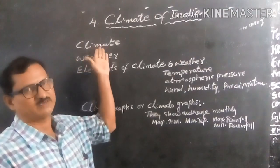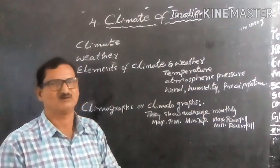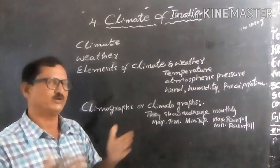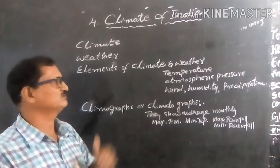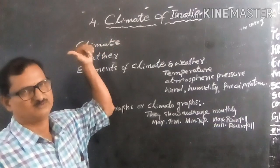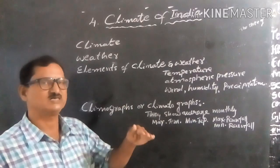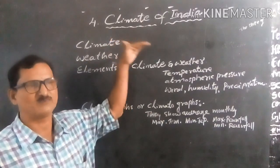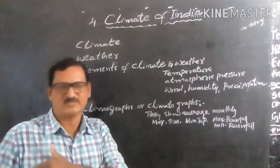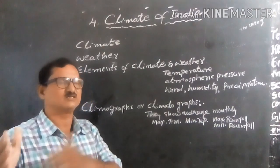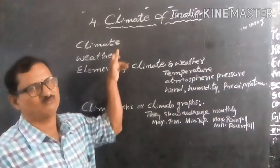Whereas climate is a state of atmospheric condition over a place studied for a minimum of 30 to 35 years, after which we can declare the climate of that place. So now you can understand the difference between climate and weather: climate requires minimum 30 to 35 years of study, whereas weather refers to sudden short-term changes in atmospheric condition.